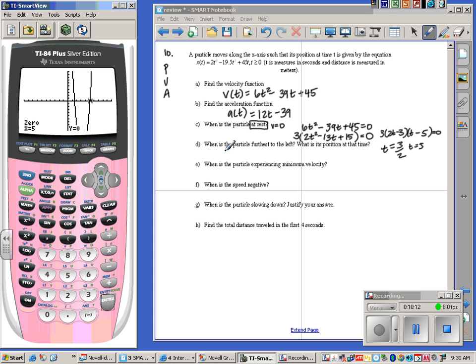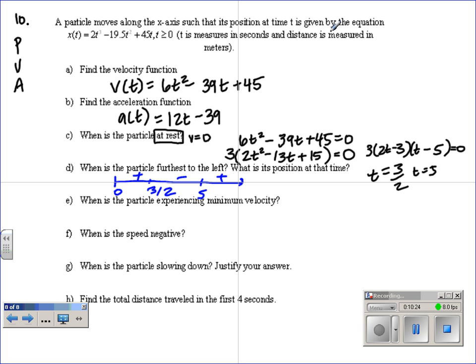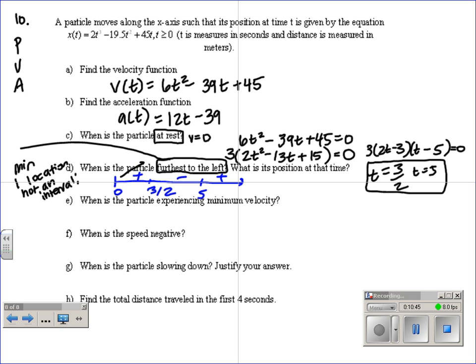We have 0, 3 halves, and 5. We have positive, negative, positive. Okay, so continue the question. At rest, or the 2 times here, furthest to the left, furthest to the left. This is the same as asking a minimum. We need 1 location, not an interval. Okay, furthest to the left is the same as asking what's the minimum. The minimum would be at time equals 5 seconds. Okay, because this means right, left, right.